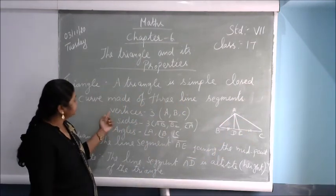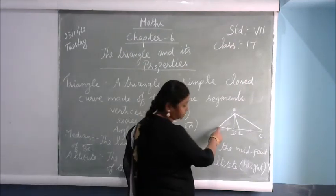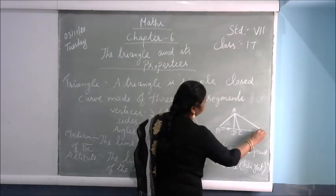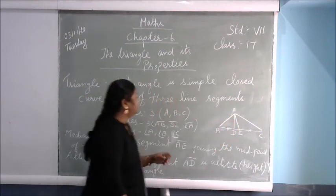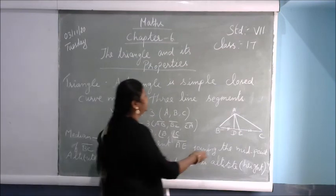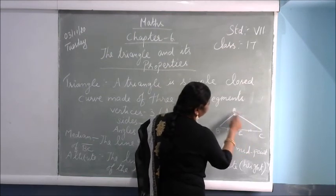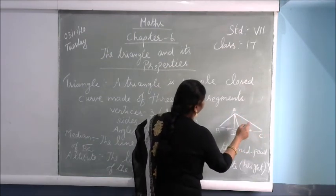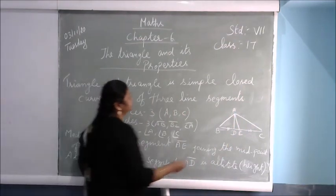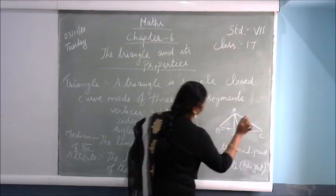How many vertices does a triangle have? A triangle has three vertices — a vertex is a point. These points are called vertices: A, B, and C. How many sides does it have? It has three sides: AB, BC, and AC. And how many angles are there? There are three angles: angle A, angle B, and angle C.